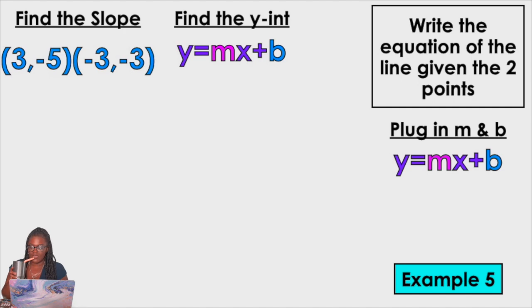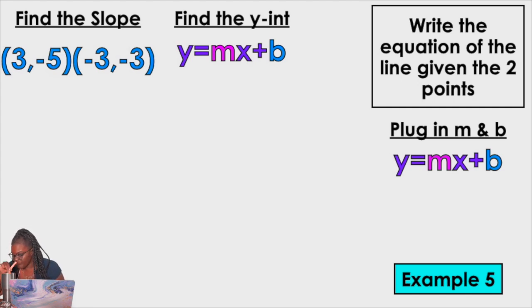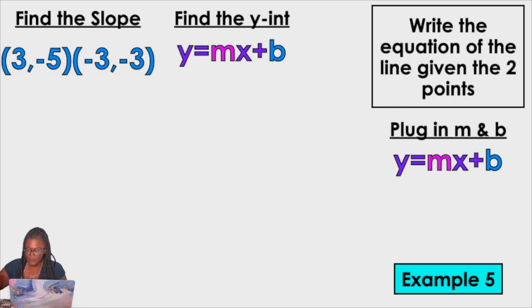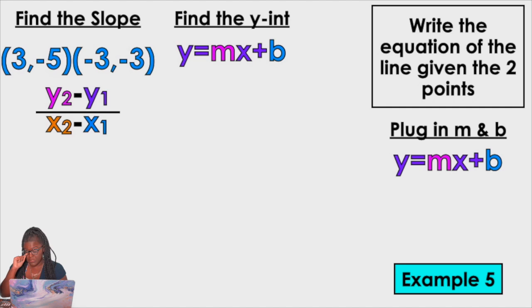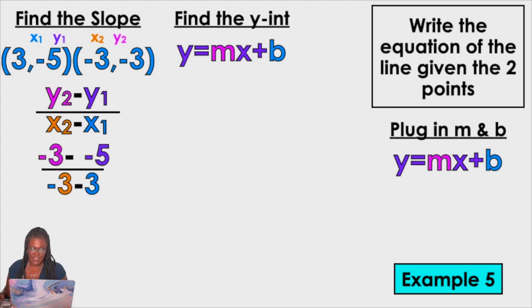Slide 7 out of 12 — pause the video, see if you can do it yourself. Y2 minus Y1 over X2 minus X1. Label your points X1, Y1, X2, Y2. Plug them in: negative 3 minus minus 5, over negative 3 minus 3. Minus minus gives us a plus — so that's negative 3 plus 5. Negative 3 plus 5 is 2. Negative 3 minus 3 is negative 6. My slope simplified is negative 1 third.